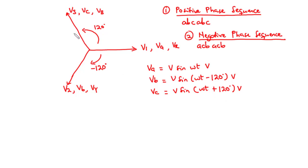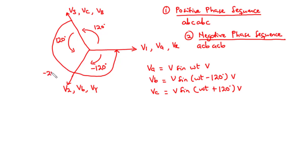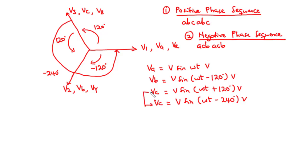Moving from Va in the anticlockwise direction, the angle between the two source voltages is 120 degrees, and Vc is said to lead Va by 120 degrees. So Vc equals V·sin(ωt + 120°). We can also say that Vc lags Va by 240 degrees — that is 120 plus 120 — so Vc equals V·sin(ωt − 240°). Either expression for Vc is correct.